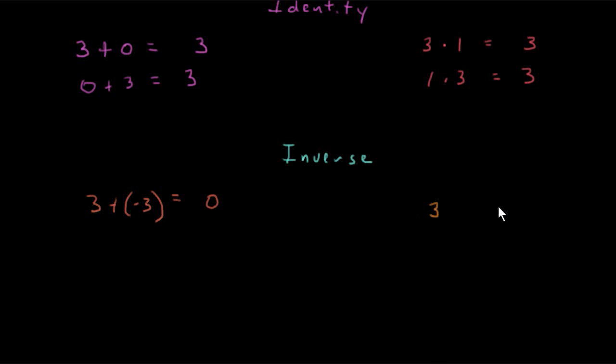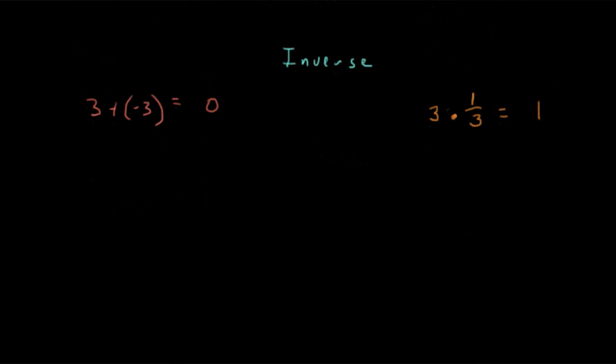How about for multiplication? What would I need to multiply 3 by to get its identity element for multiplication, which is 1? 3 times its reciprocal would give me 1. So if you see a case of this, this is a case of the inverse property.